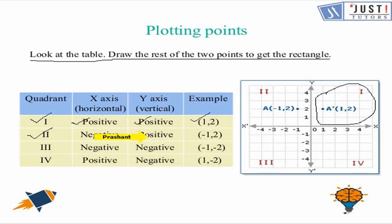In the third quadrant, the x value is negative because we travel in the negative x direction from 0, and when we go down we also get a negative number. So both x and y values are negative — for example, the point minus 1, minus 2 would be in the third quadrant. In the fourth quadrant, the x value is positive and the y value is negative, so a point like (1, minus 2) would be located there.